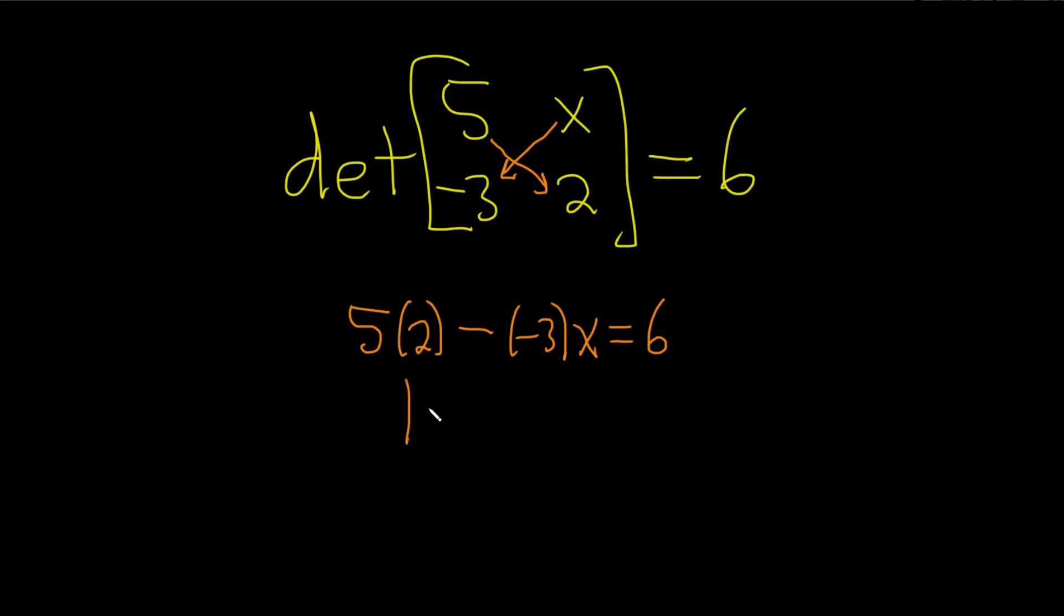5 times 2 is 10. So we have 10. This will become a positive 3 because there's a double negative. So plus 3x, and that's equal to 6.